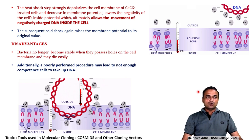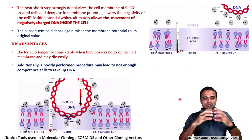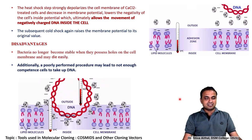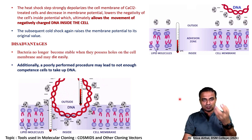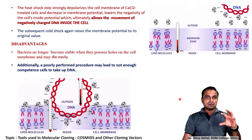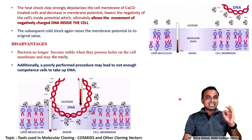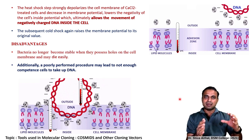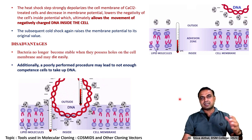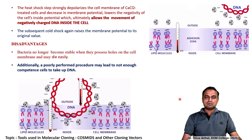There are two disadvantages of this process. First, bacteria no longer remain stable when they possess holes — if the bacterial cell wall has holes, you cannot guarantee viability or binary fission. If there are more holes, they may die easily. It is therefore a very fine, artistic technique requiring careful control over how long the cells are suspended and what concentration of calcium chloride is used — all of these determine permeability of the DNA and viability of the cell. The second disadvantage is that a poorly performed procedure — if the technician is not skillful — may not only kill the bacteria but result in very few competent cells in the culture. This is a fine artistic technique which has to be mastered with practice.